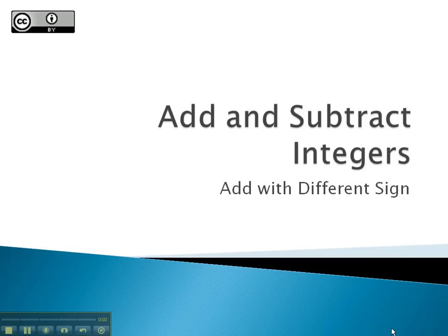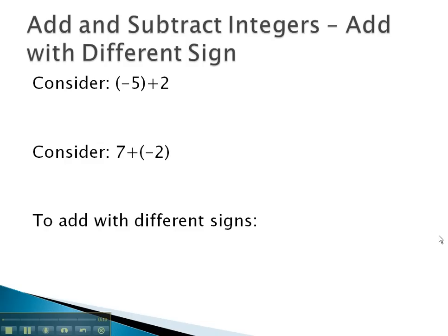In this video, we're going to take a look at how we can add integers that have different signs. In other words, one integer will be positive and one integer will be negative. To do this, we're going to consider two problems. First, we'll look at negative five plus two.